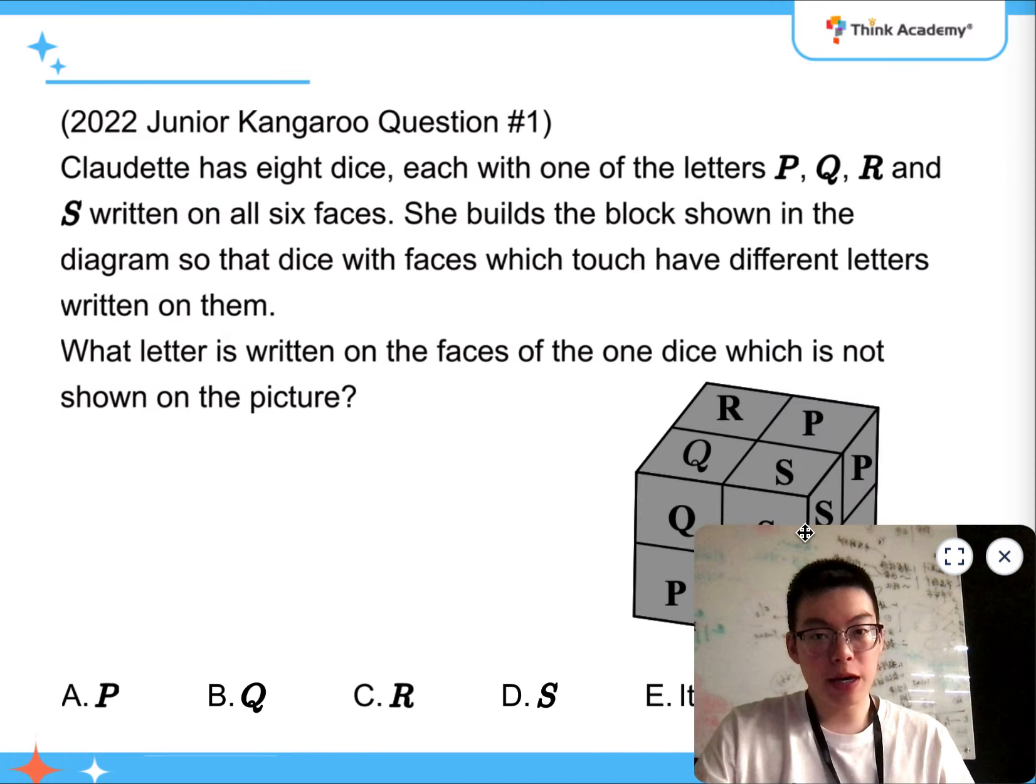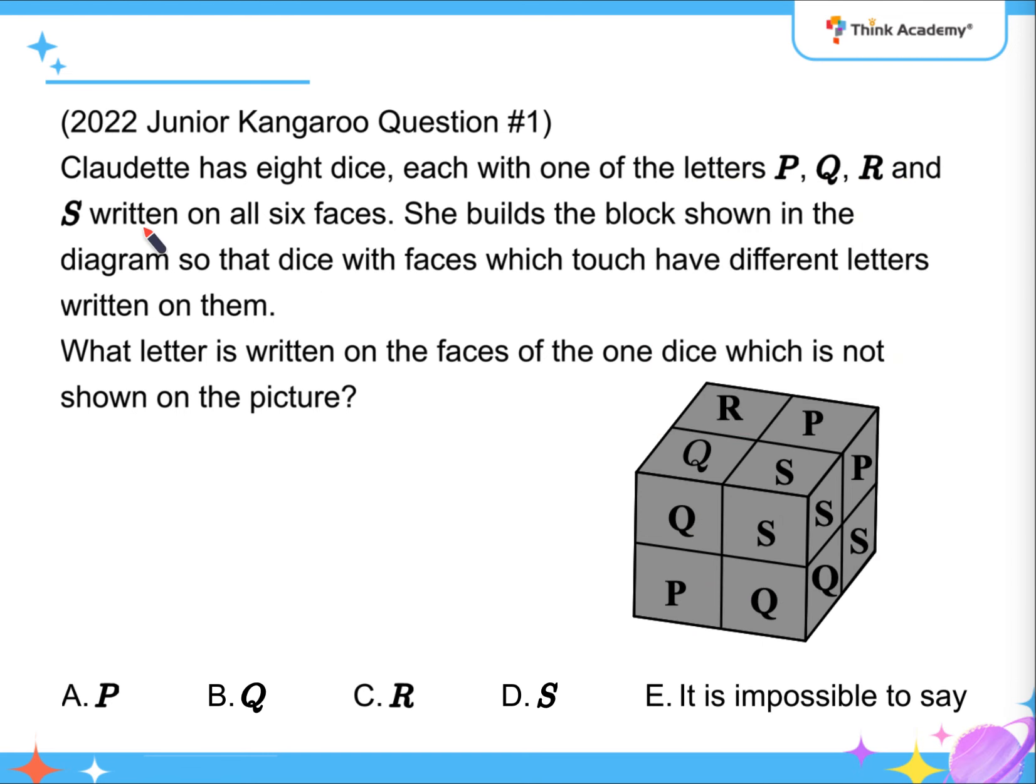For the first question, it says that someone has eight dice, each with one of the letters P, Q, R and S written on all six faces. She's built a block such that the dice with faces which touch have different letters written on them. What letters written on the face of the one dice which is not shown?